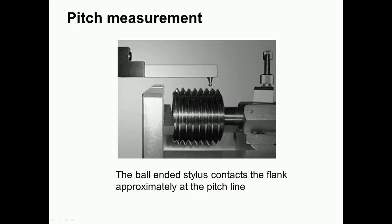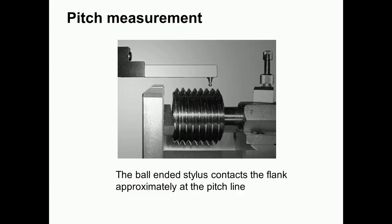This picture shows the arrangement of pitch measurement. We can see a center on which the screw thread is mounted and a bar which carries the stylus. The stylus will move from one thread to the next, get seated into the thread groove, the micrometer reading is taken, and then it is moved to the next thread. The stylus always contacts the flank approximately at the pitch line.